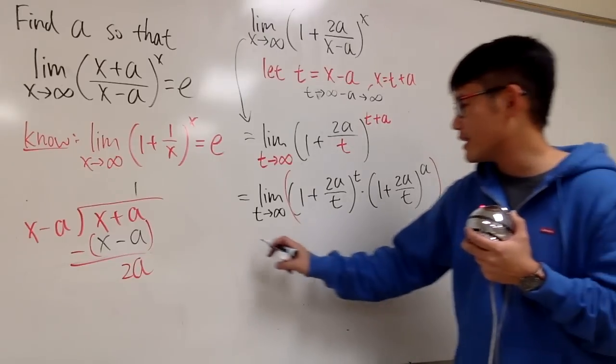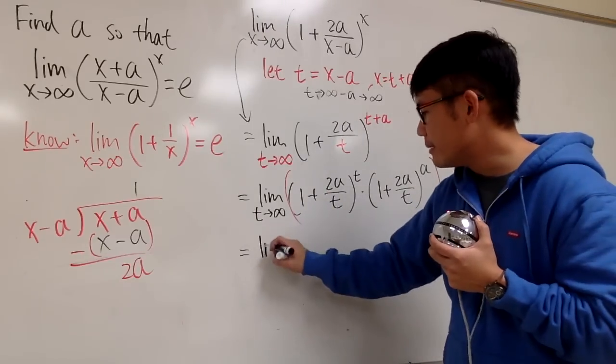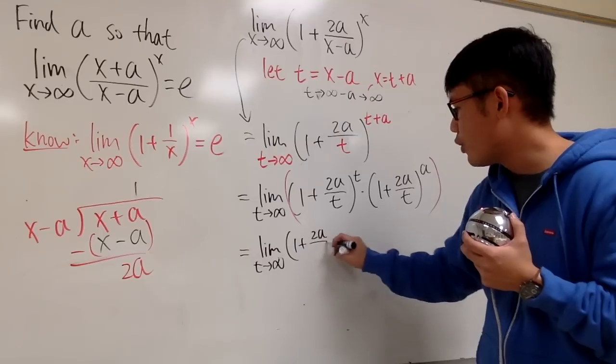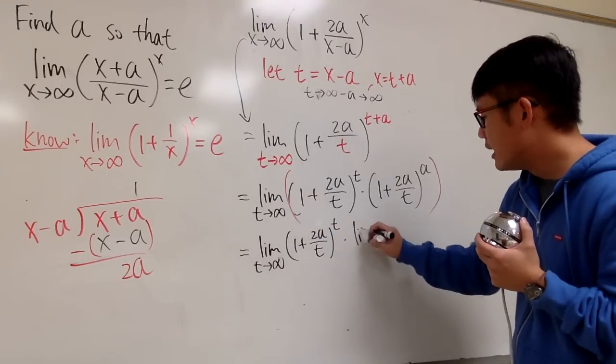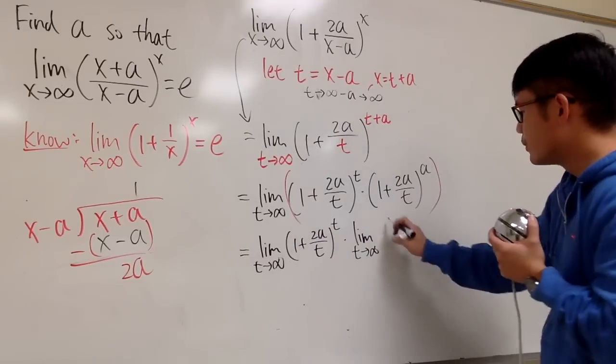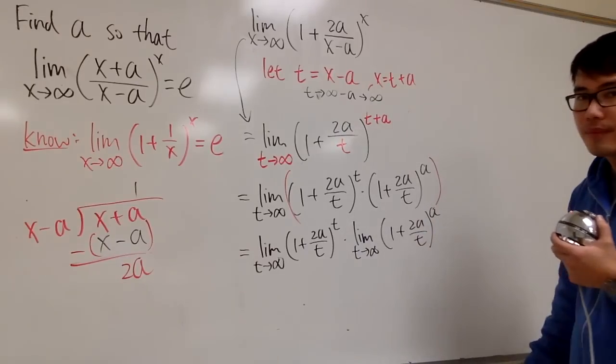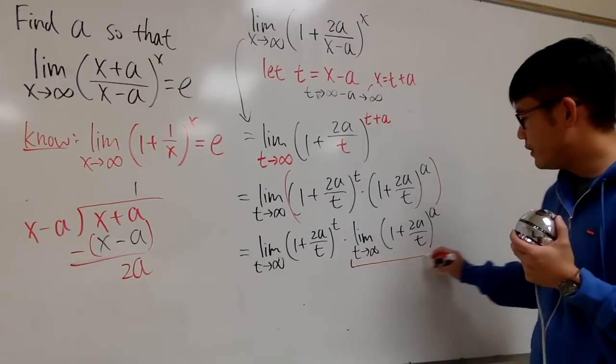Let me put this down for you guys. So, this is the same as, we take the limit as t goes to infinity of the first term, which is this: 1 plus 2a over t raised to the t power. And then we take the limit as t goes to infinity of this, which is 1 plus 2a over t raised to the a power.